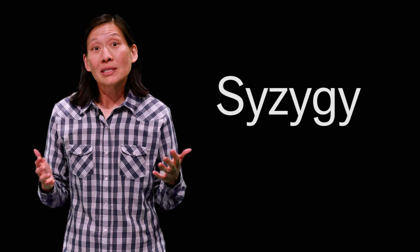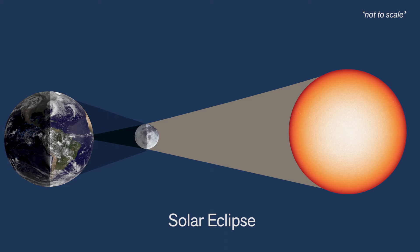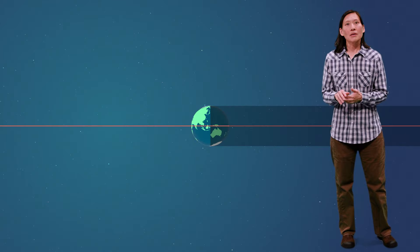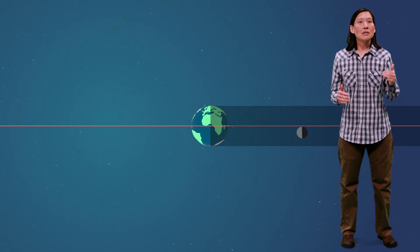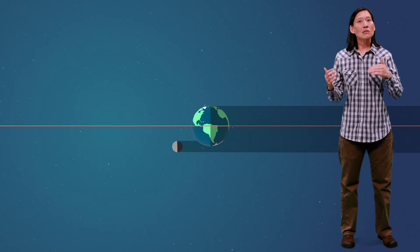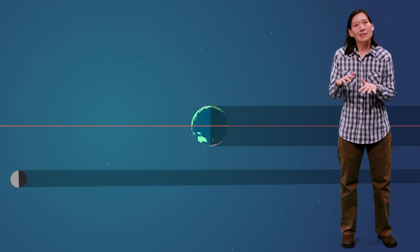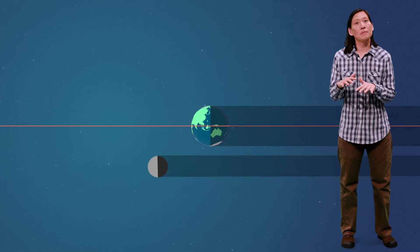The order they're in when they line up determines what type of eclipse there will be. A solar eclipse happens when the Moon passes between the Sun and Earth and either fully or partially blocks the Sun's light. This only happens occasionally because the Moon doesn't orbit in the exact same plane as the Sun and Earth do.